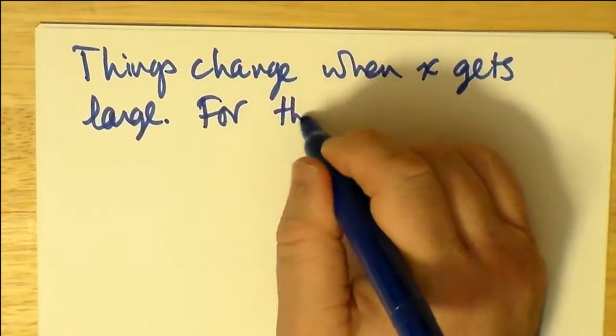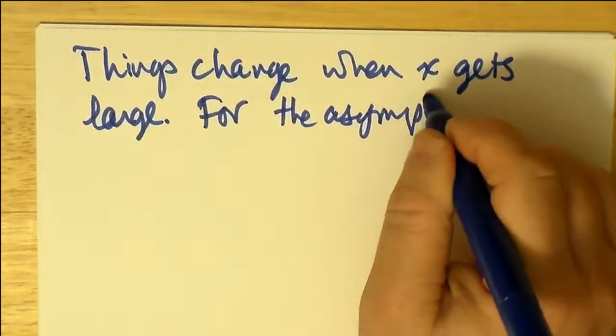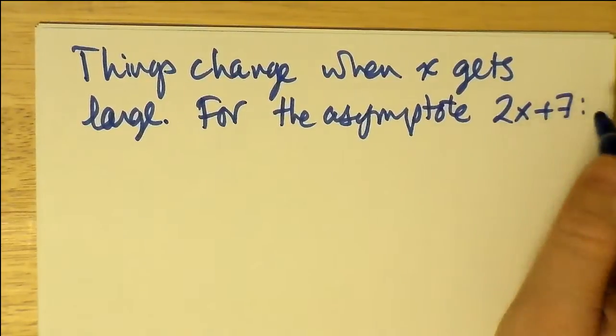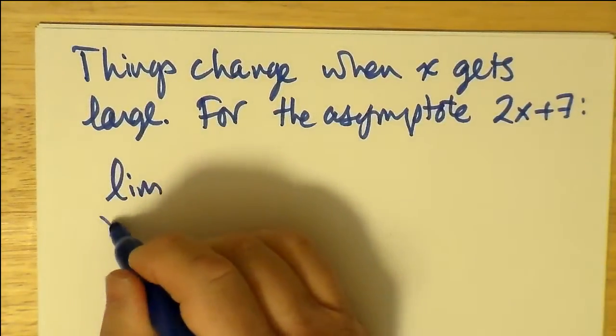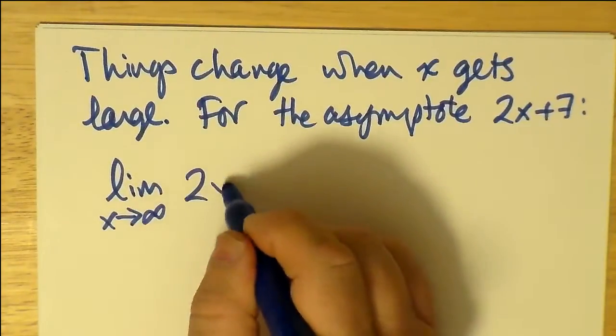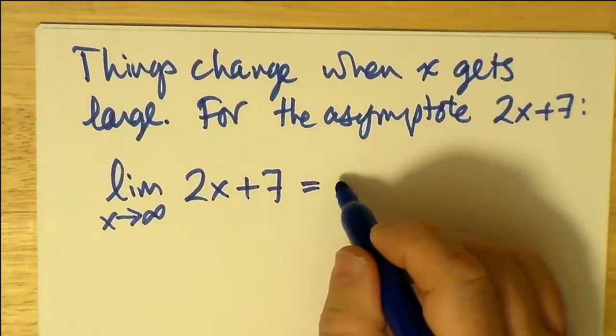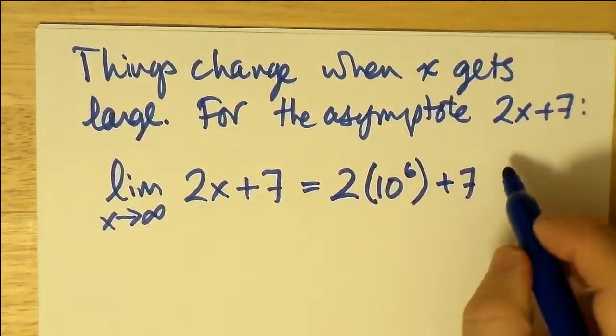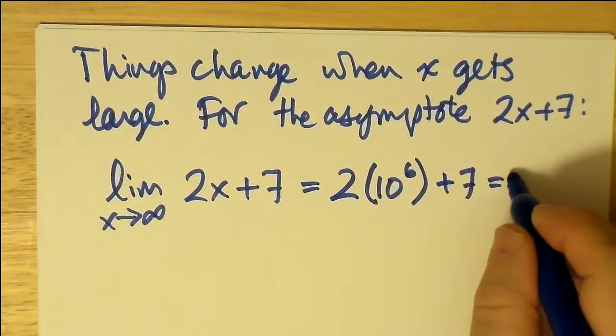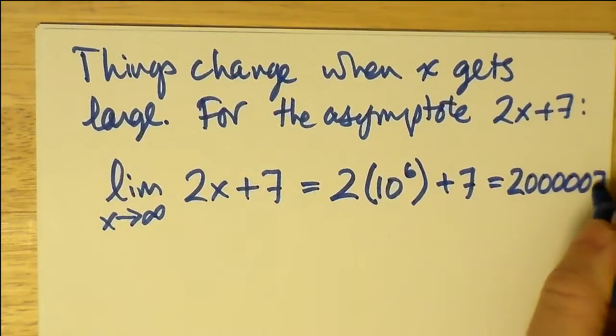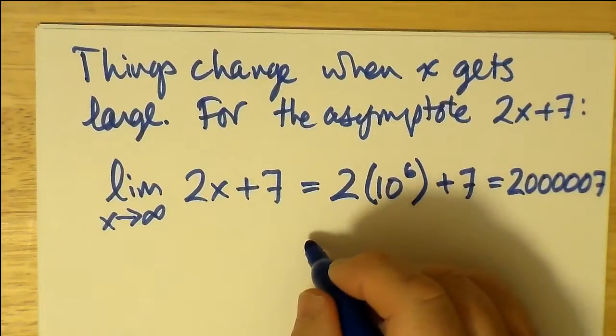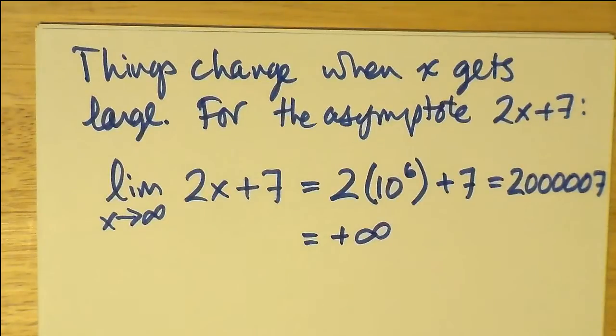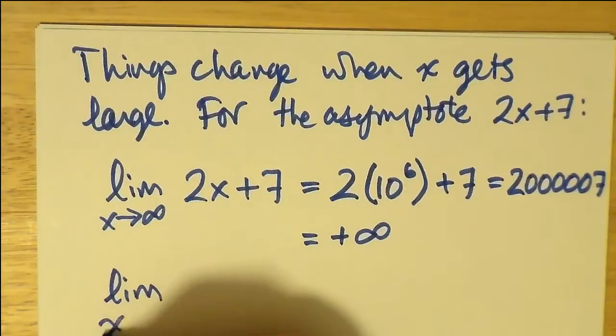Now, things change when x gets large. When x gets very, very big, 2x plus 7, of course, dominates. And I'll show you how it dominates. For one thing, let's just look at 2x plus 7 by itself and take its limit as x goes to infinity. And if you recall what a limit is, as far as we're concerned in advanced functions, we just think of a really, really big number and substitute it for x if we're thinking of x going to infinity. So I'm going to choose a million or ten to the sixth. This results in 2,000,007 as the result. And I think you and I can agree that that's pretty much on its way to positive infinity.